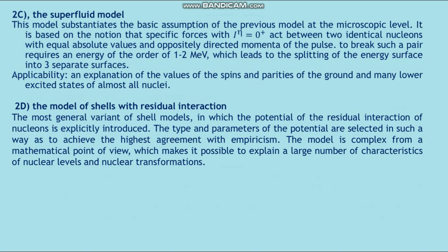Shell model variant (d): the model of shells with residual interaction. This is the most general variant of shell models, in which the potential of the residual interaction of nucleons is flexibly introduced — the type and parameters of the potential are selected to achieve the highest agreement with experiment. The model is complex from a mathematical point of view, making it possible to explain a large number of characteristics of nuclear levels and nuclear transformations.